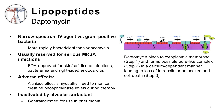Shifting gears to the lipopeptide antibiotic class, there is only one representative member currently available in the U.S. — daptomycin. Daptomycin has a similar spectrum of activity to the glycopeptides; however, it is more rapidly bactericidal than vancomycin. The mechanism of action shows how daptomycin binds to the cytoplasmic membrane in Step 1 and forms a possible pore-like complex in Step 2 in a calcium-dependent manner. This eventually leads to loss of intracellular potassium and cell death, shown here in Step 3.